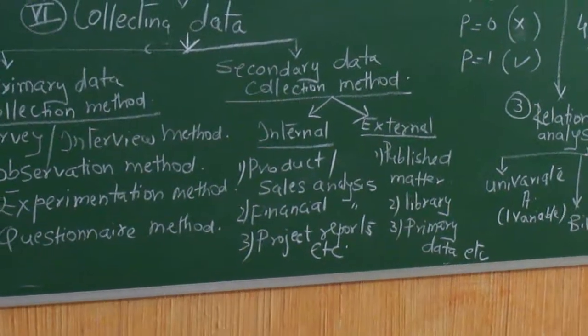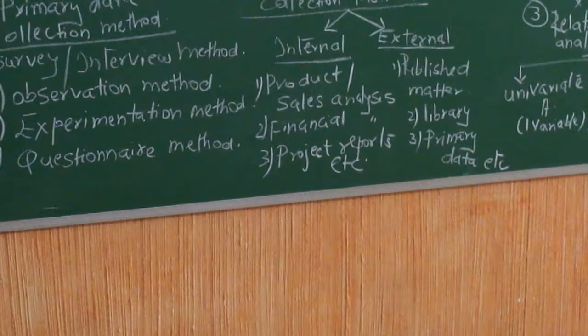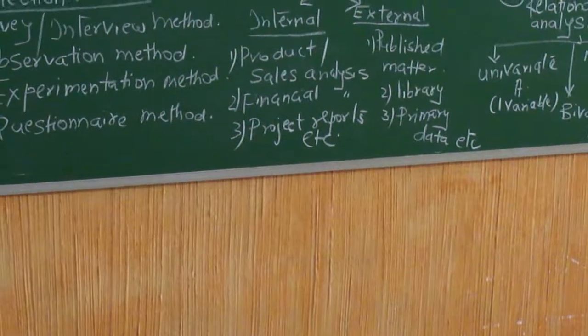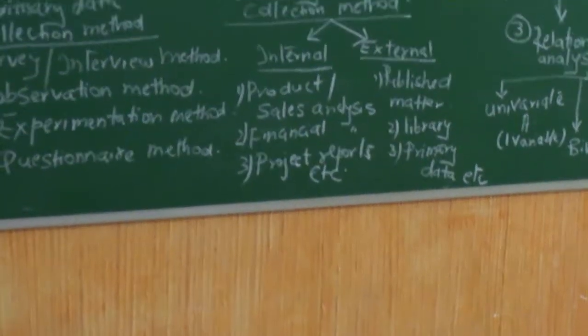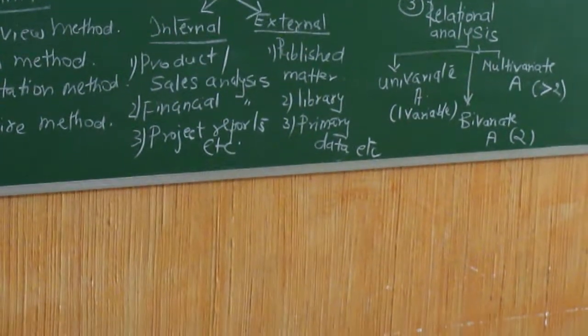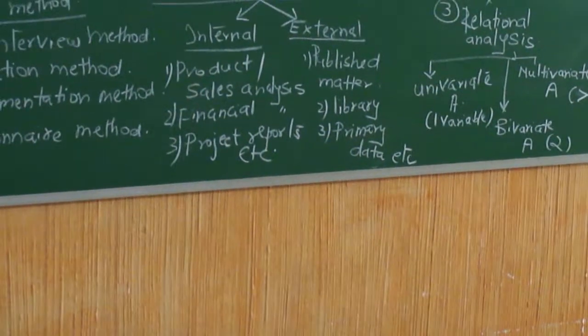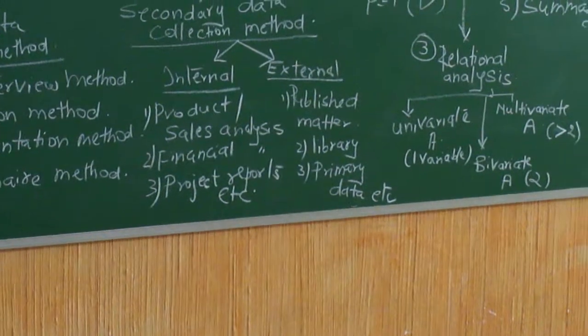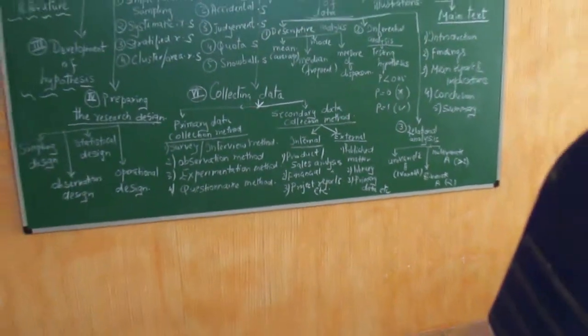Then comes the secondary data collection method. It is very difficult, very time consuming, money consuming to do primary data all the time. So one fall back on secondary data collection method. If it is done for the office, then you could do it internally and look at the earlier product sales analysis, financial analysis, project reports done so far. External you can fall back on your library, published matter, people who have earlier done primary data collection. So these types of methods can be used for collecting the data.